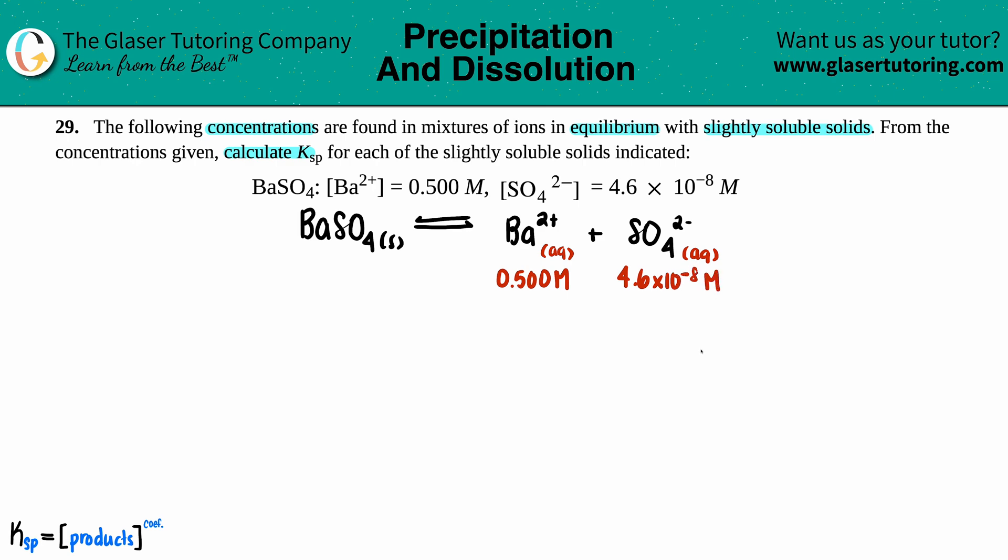Now let's use our balanced equation to find out the Ksp equation for our question. Generally, Ksp just equals products raised to the coefficients, no solids allowed.